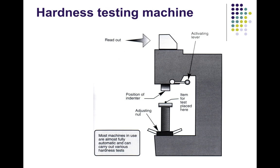The workpiece is placed here at that point, and we give a dent at that location. We also have adjustable tools. This hardness testing machine is used for the various hardness tests.